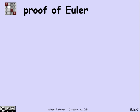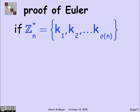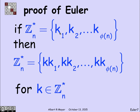Let's proceed with the proof of Euler's theorem. Suppose we write out all the elements in ZN* and call them k1, k2, up through k phi-of-n in any order. Now suppose I take each of those elements and multiply them by the same element k. So I wind up with k times k1, k times k2, up through k times k phi-of-n, where k itself is in ZN*. Then I claim that the two sets are equal — if you multiply each element of ZN* by the same element in ZN*, all you do is permute the elements of ZN*.